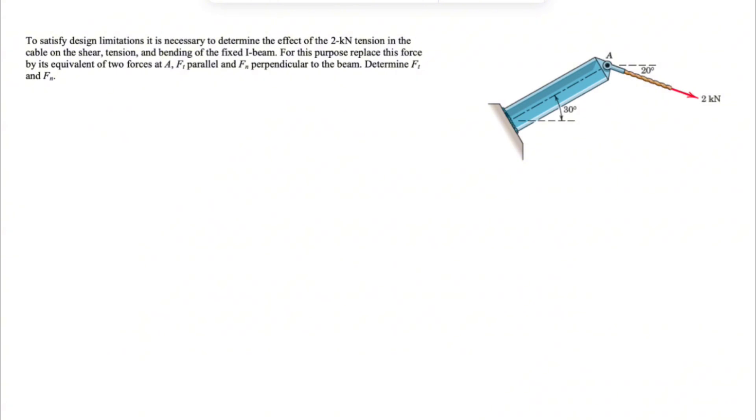And the question is asking to replace this force, 2kN, that we have by its equivalent of two forces at point A. One of them is Ft, which will be parallel to the beam. So if we draw a line parallel to the beam, the components of the force, we're going to call it Ft. And the one perpendicular to the beam, you can show it with this dotted line, I'd ask us to call that one Fn. So one normal to the beam and one parallel to the beam.